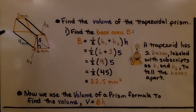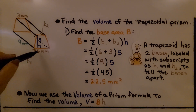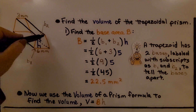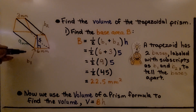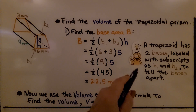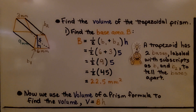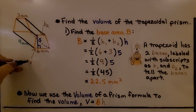Here we need to find the volume of the trapezoidal prism. Looking at the diagram, we can see this orange trapezoid has a base of six millimeters, and a second base up here of three millimeters. A trapezoid has two bases labeled with subscripts as b sub one and b sub two to tell the bases apart. These small numbers on the lower right-hand side are called subscripts, and they help us determine which base is which.